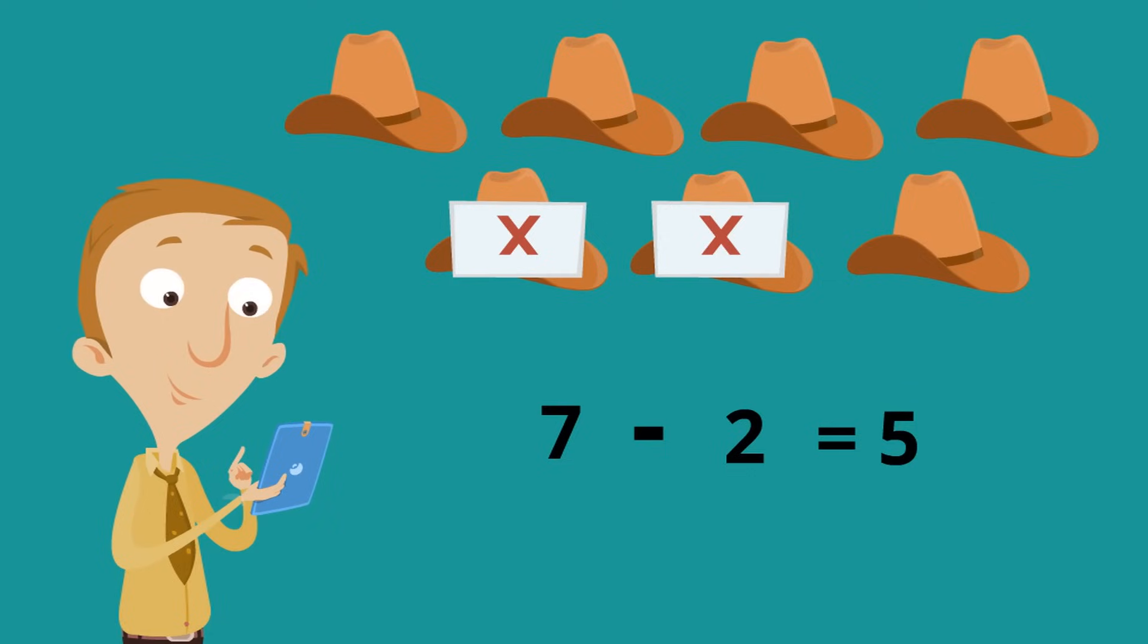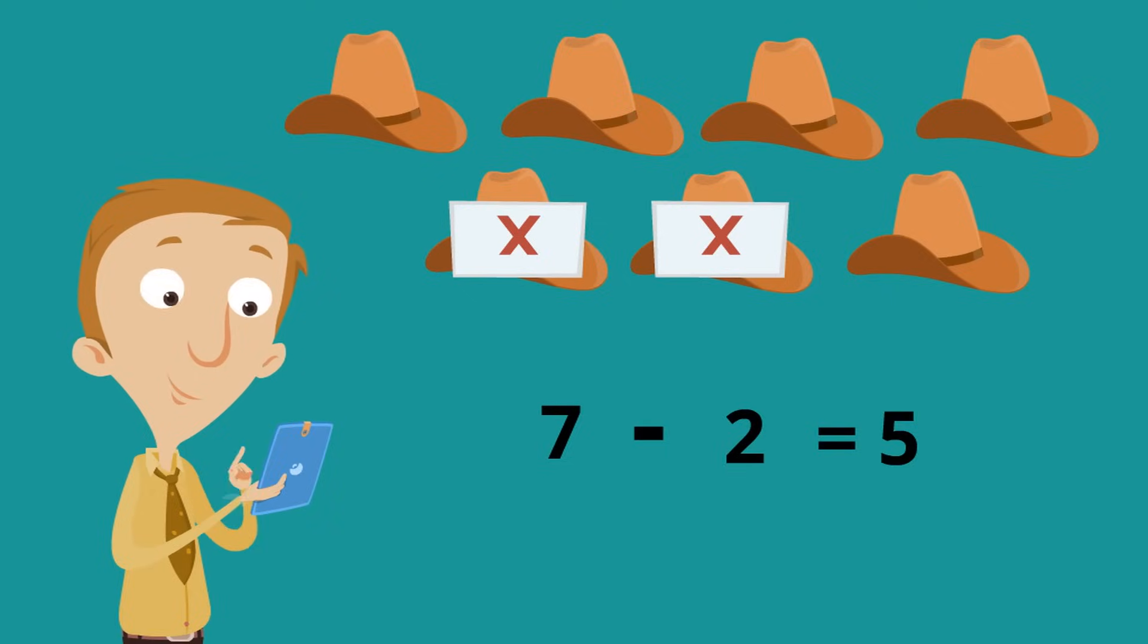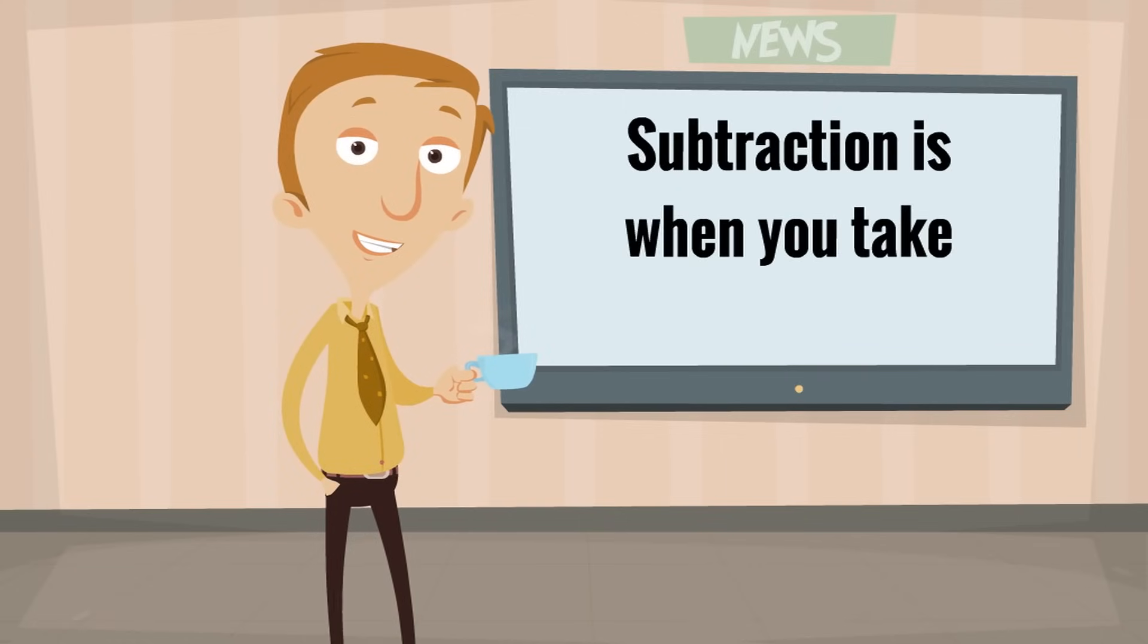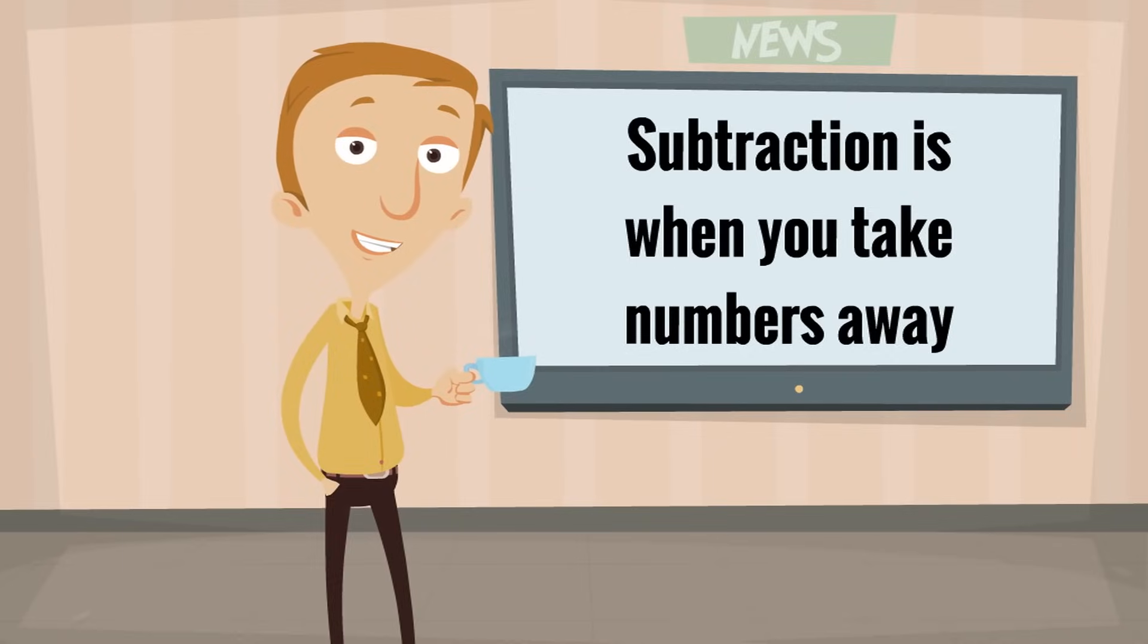Five hats. And, you can even count them. One, two, three, four, five. There are five hats left. Seven minus two equals five. Do you see how fun and simple subtraction is? Subtraction is when you take numbers away. So, now, I have five hats in my collection. Only five hats left.